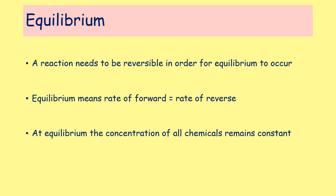Once you reach equilibrium, the concentration of your reactants and the concentration of your products remains constant. That's not to be confused with saying the concentrations of reactants and products are the same as each other — all it means is that once you reach equilibrium the concentrations do not change. Products are being turned into reactants and reactants are constantly being turned into products, but because the rates are equal the concentrations remain constant.